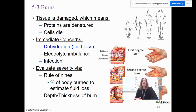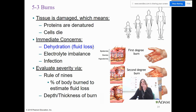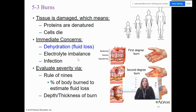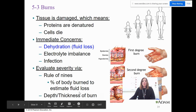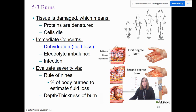Now let's talk about burns. When there's a burn, tissue is damaged — proteins are denatured and cells die. Immediate concerns are dehydration, infection, and electrolyte balance. When doctors evaluate a burn, they use the rule of nines — this estimates fluid loss based on the percentage of the body burned. They also look at the depth and thickness of the burn. A first degree burn affects only the epidermis.